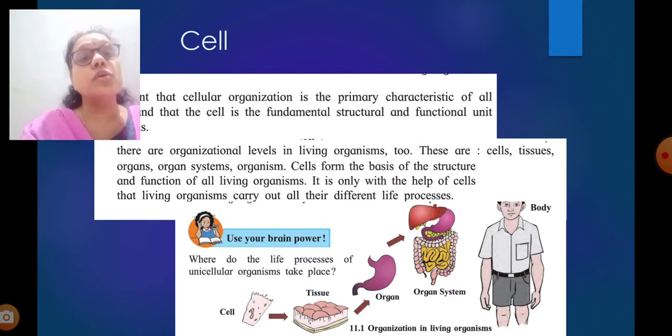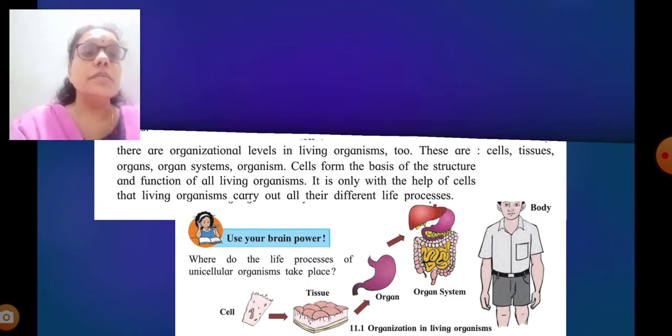In the picture, they have shown that cell is the basic unit, then tissue, organ, organ system, and organism or human. Cells form the basis of the structure and function of all living organisms. It is only with the help of cells that living organisms carry out all their different life processes. All the life processes - respiration, excretion, assimilation - these are all happening with the help of cells only. That is the meaning of cell.